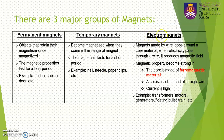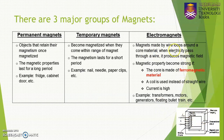The last major group is the electromagnet. The magnets can be made by wiring loops around a core material. You take a core material, wire loops around it, and when electricity passes through the wire it produces a magnetic field around it. The magnetic property becomes strong if the core is made of ferromagnetic material, if a coil is used instead of a straight wire, and if the current supply is high. Applications of electromagnets include transformers, motors, generators, and floating bullet trains.